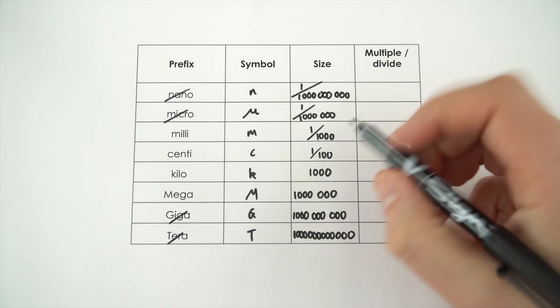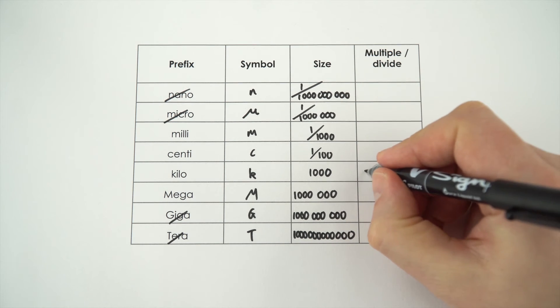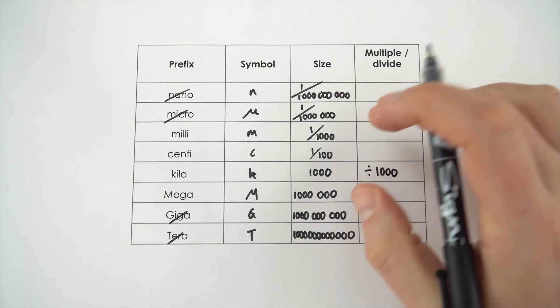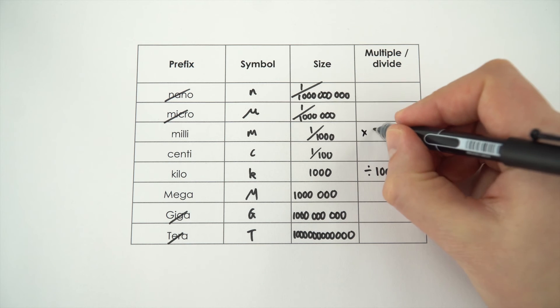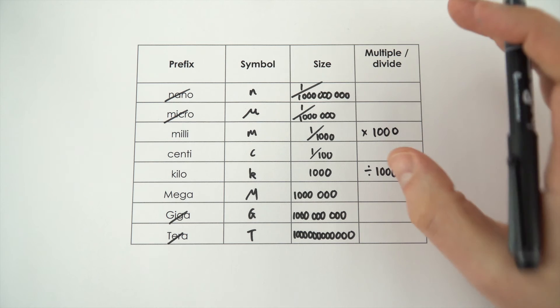Now that means if you want to maybe convert from kilometres back into metres, what you then do is divide by a thousand. Or if you maybe want to know how many millimetres are in a metre, what you're then doing is multiplying by a thousand. I've got a few examples below that show that in action.